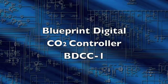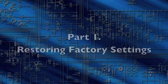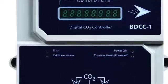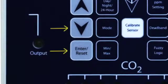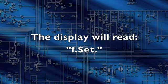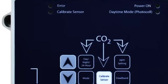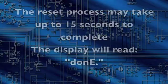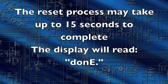This is the instructional video for the Blueprint Digital CO2 controller, the BDCC1. Restoring Factory Settings: Hold the Enter Reset and Down Arrow button for three seconds. The display will read F-Set. Press the Enter Reset button again to restore the default factory settings. When the process is complete, the display will read DONE. It may take up to 15 seconds to complete the process.